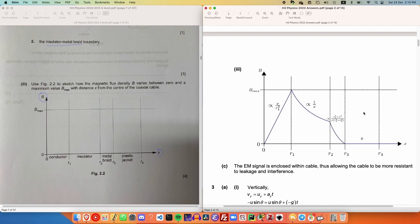So, the answer is given as follows. Basically, we obtain this graph by applying Ampere's law four times. Now, the expressions for within a conductor and the insulator and the plastic jacket is a classic problem. However, there's more work required to do inside the metal braid.